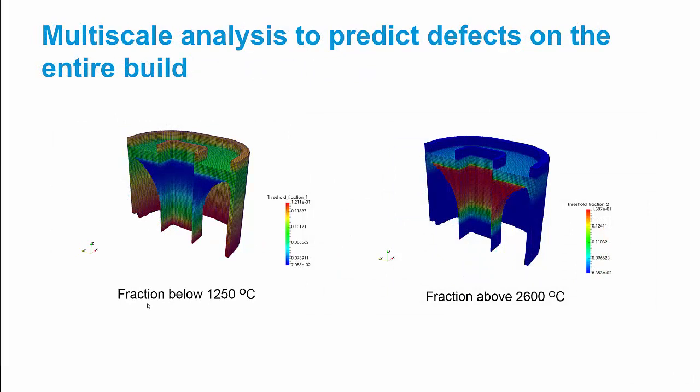What we're going to be able to get from mapping this information is a map at the end of the analysis that tells you how likely you were to have these problems. We correctly flagged that lower on the wall here, we're most likely to have problems with lack of fusion. This is the volume fraction of the elements in that region that experienced a problem with lack of fusion.